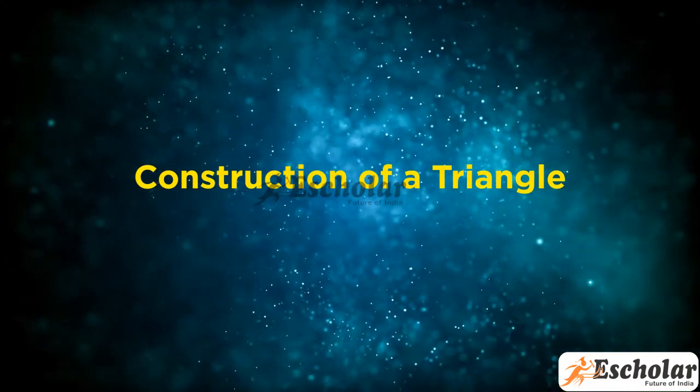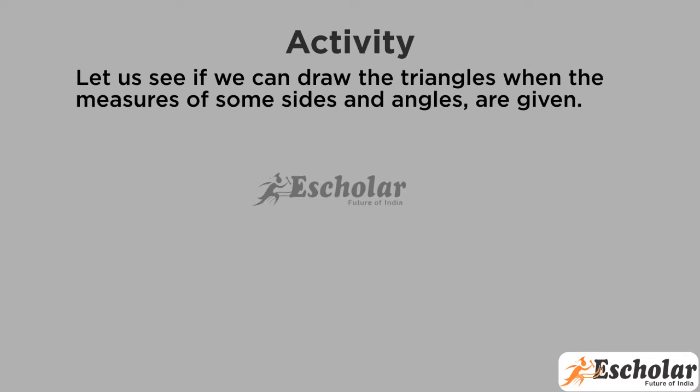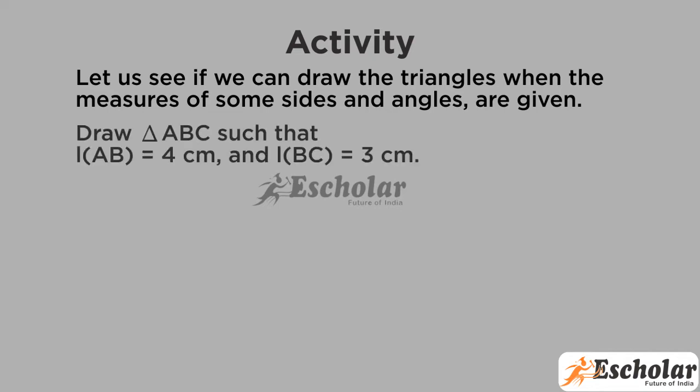Construction of a Triangle. Activity: Let us see if we can draw the triangles when the measures of some sides and angles are given. Draw a triangle ABC such that length of AB is equal to 4 cm and length of BC is equal to 3 cm.